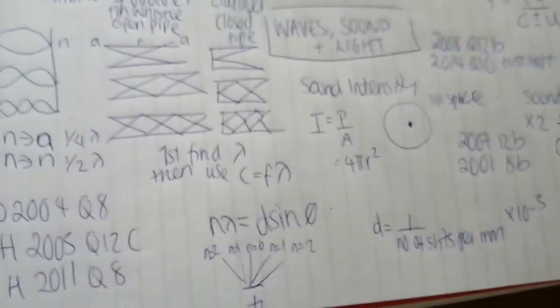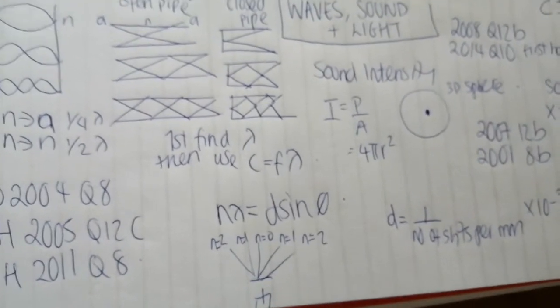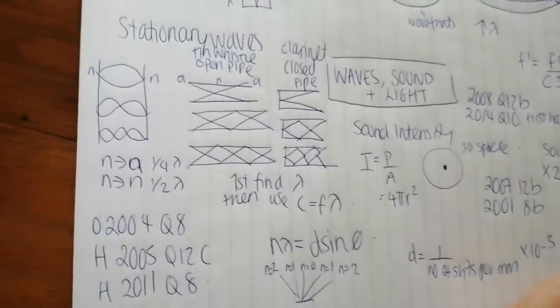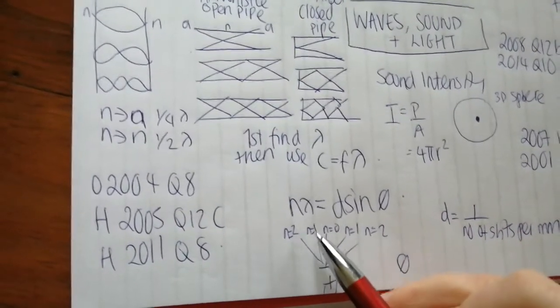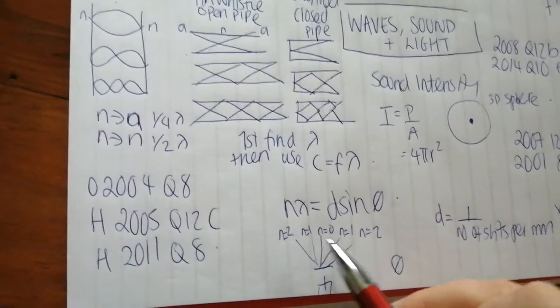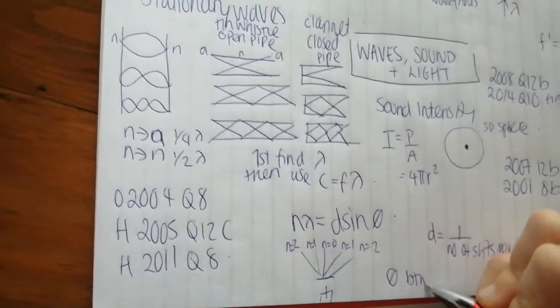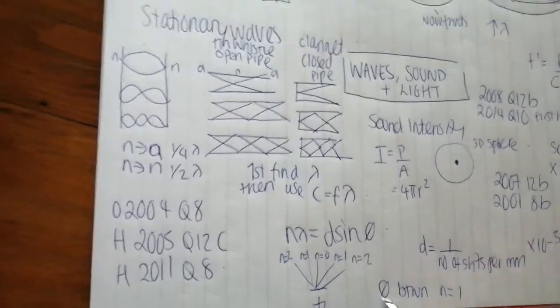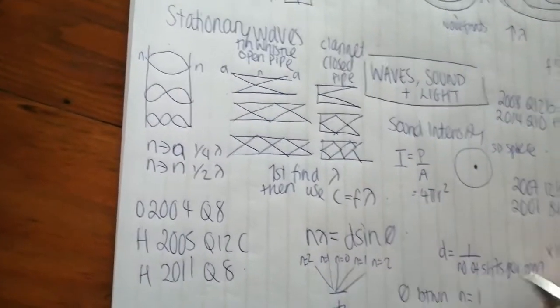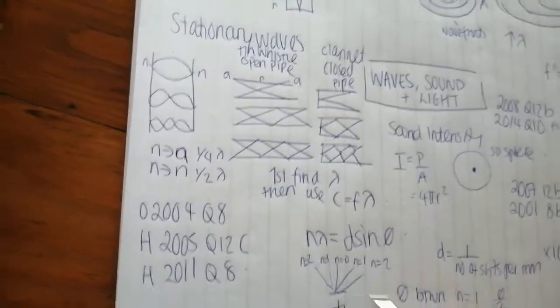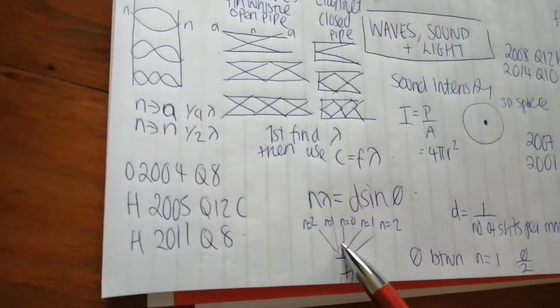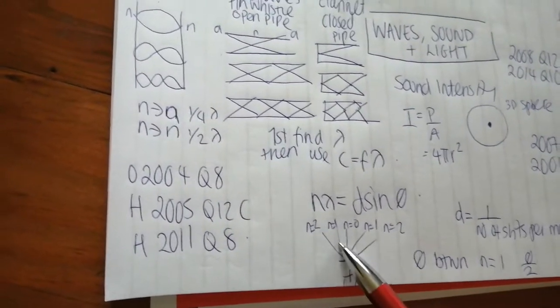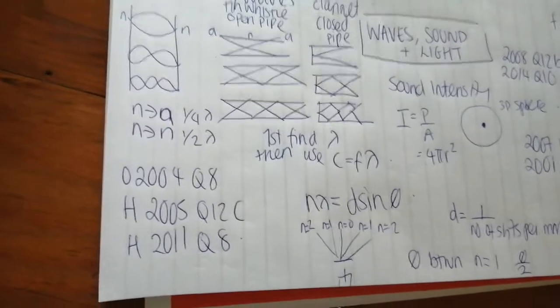So some general kind of things to mention here that can be a little bit tricky. Often when they tell you the angle, they will tell you the angle between, let's say the first order images. So the angle between the N is equal to ones, you obviously have to divide that angle by two for using this formula here. So often you're told the angle between two orders to find out just the angle here, you just divide it by two.